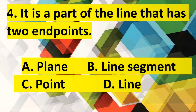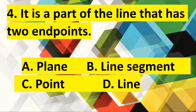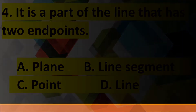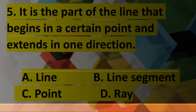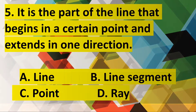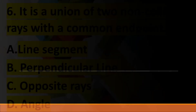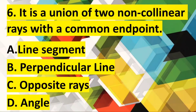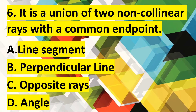Number four: It is a part of a line that has two endpoints. Number five: It is the part of a line that begins at a certain point and extends in one direction. Number six: It is a union of two non-collinear rays with a common endpoint.